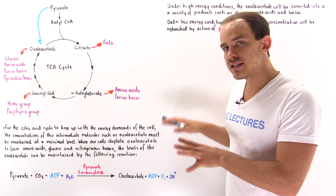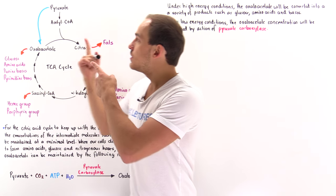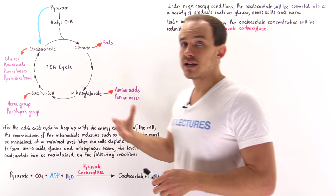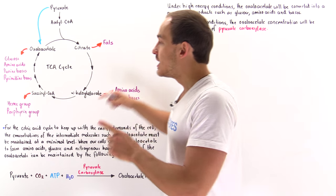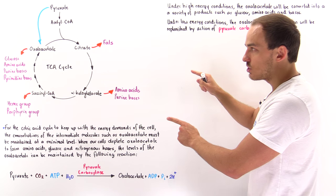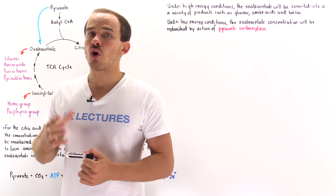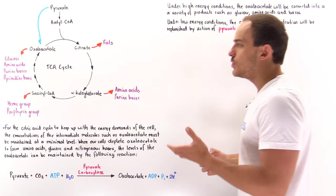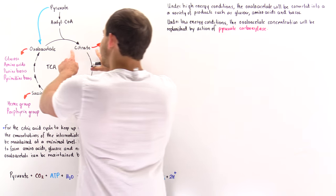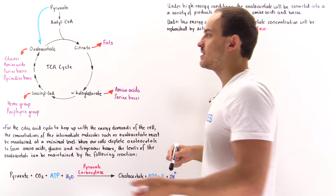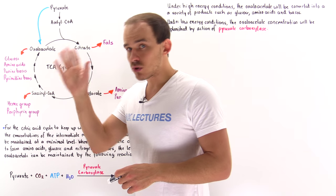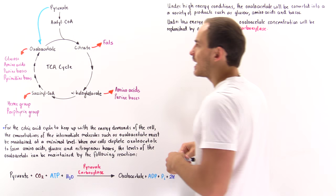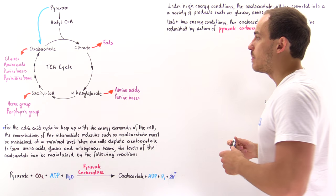In this cycle, we not only use that acetyl coenzyme A to form ATP molecules via oxidative phosphorylation, but some of the intermediate molecules of the TCA cycle are also used to form many building blocks used by the cells of our body. For instance, citrate molecules via a specific type of pathway can be used to synthesize fats and fatty acid molecules.